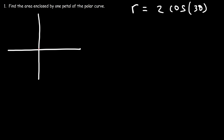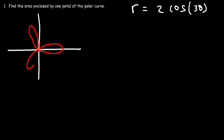This particular graph has three petals. The radius is 2, so these petals are 2 units long based on this number. So how can we find the area enclosed by one of these petals? Let's choose that one.